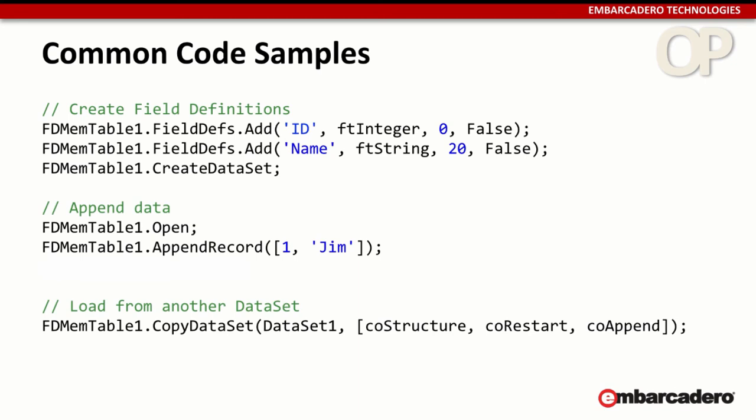After opening the dataset, we append a record by specifying all values in order. If instead we want to copy data from another dataset, there's a line that shows how to copy from DataSet1 — which can be any TDataSet descendant, not necessarily an FDMemTable or even a FireDAC dataset; it can be from any data source. In this example, we're also specifying that we want to copy the structure of that dataset. This is a way to persist data from another dataset in memory, or save it to disk as an offline briefcase model.